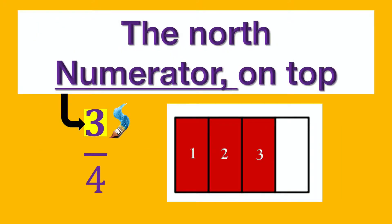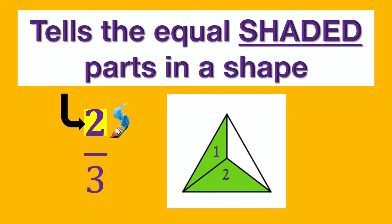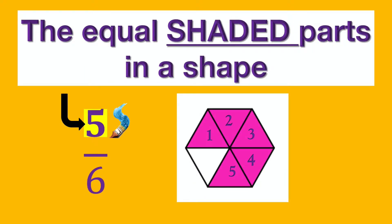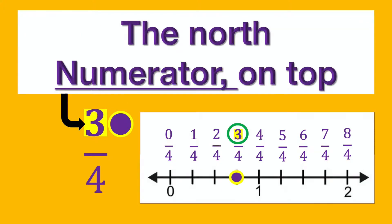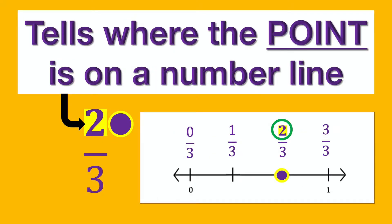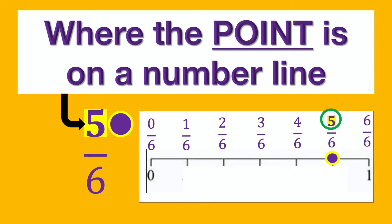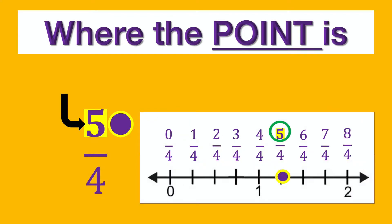The North numerator on top tells the equal shaded parts in a shape, and tells where the point is on a number line.